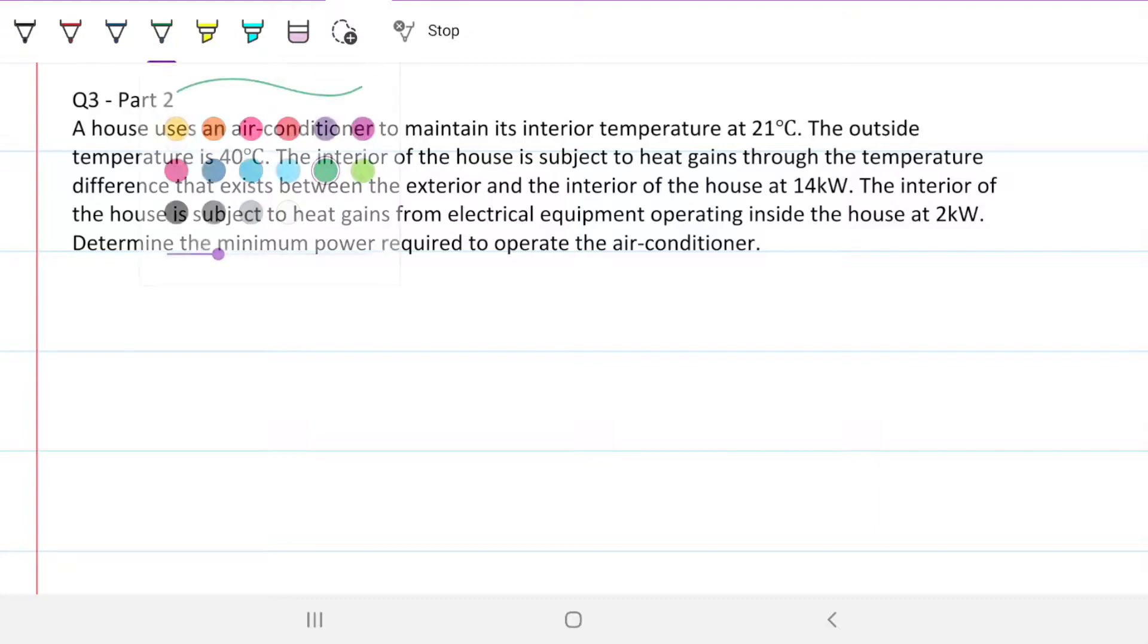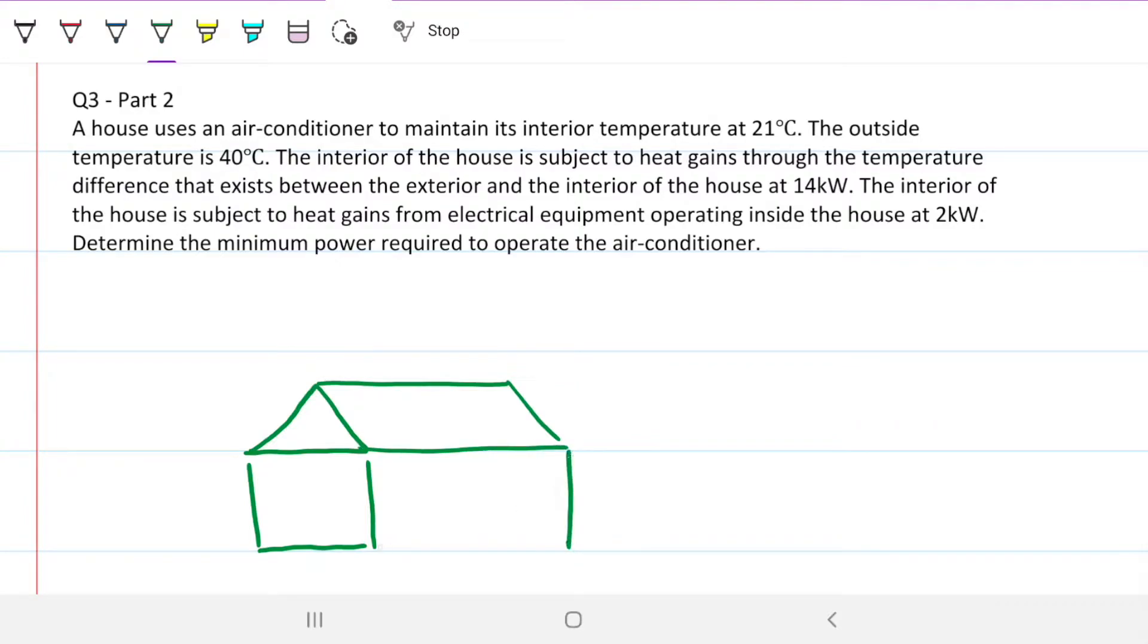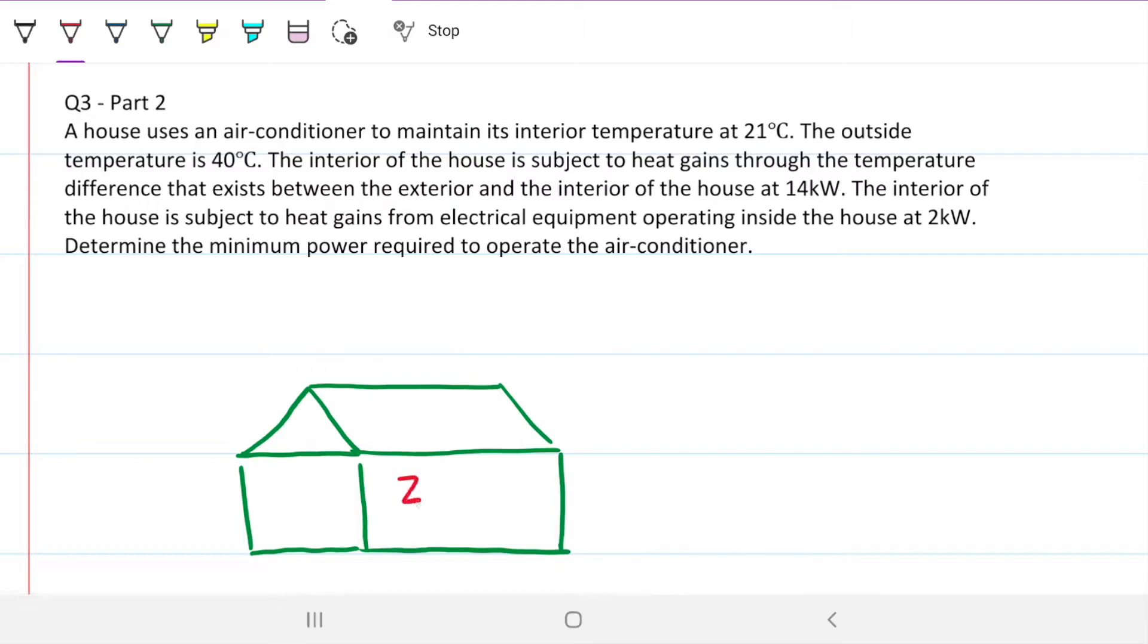So let's start by drawing a house. Those of you who are familiar with the channel will know that I have amazing drawing skills. Let's do, here you go, this house. Let me make it a bit fancier. And this house has a nice, cool 21 degrees Celsius going on, but outside is very hot. There's 40 degrees Celsius outside.